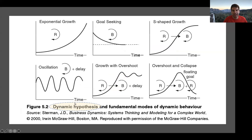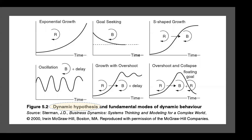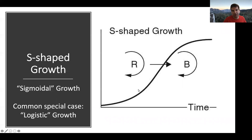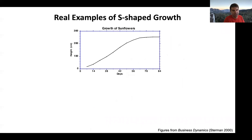Some ways of forming your dynamic hypothesis make dynamic modes of behavior more obvious. We've already learned about certain types of modes of behavior — we've seen the S-shaped growth curve show up quite a bit. Some models make it more obvious that there's S-shaped growth than others, so we're going to talk about ways to build these models so that dynamic hypotheses are more clear when you look at the diagrams.